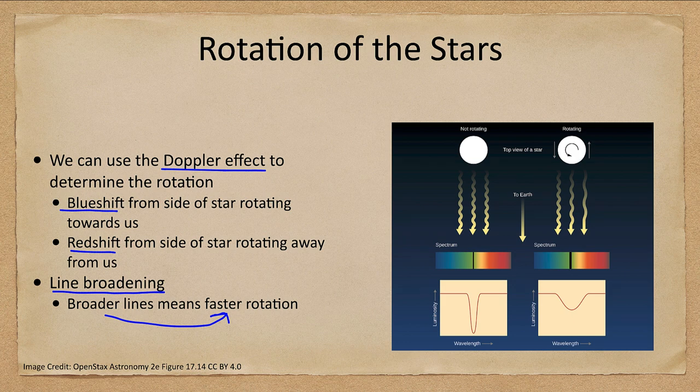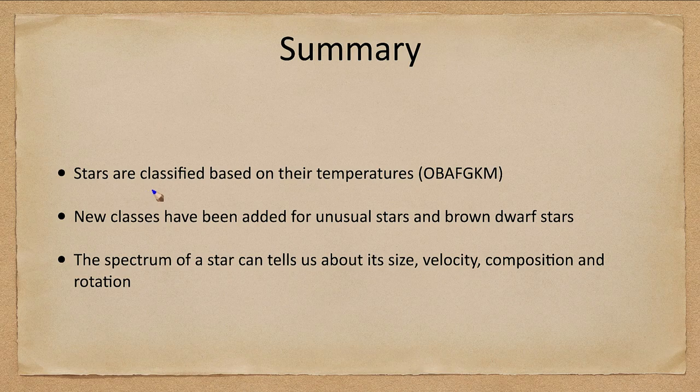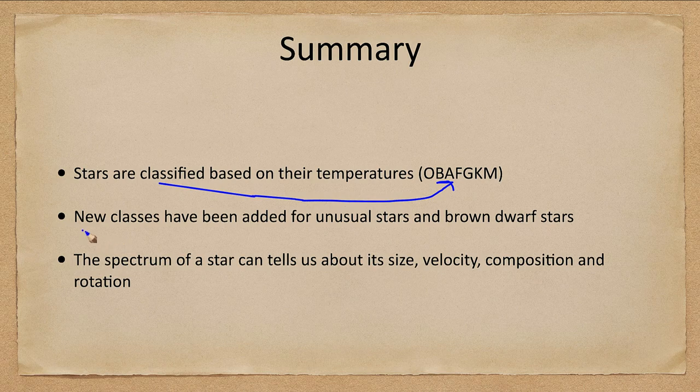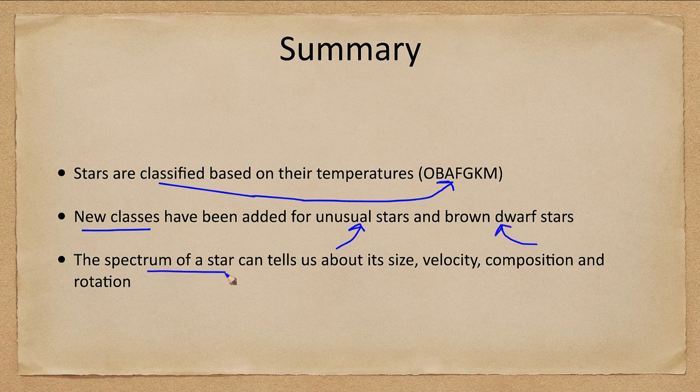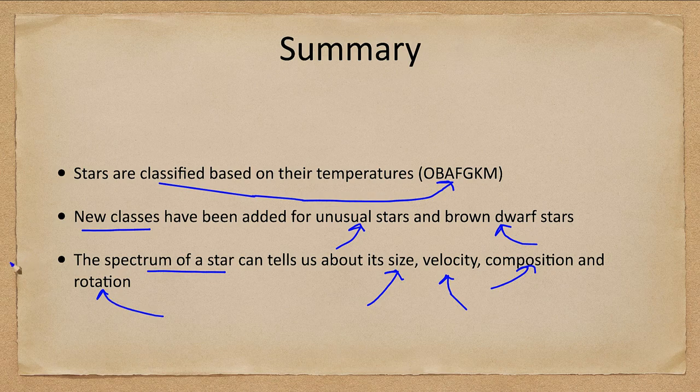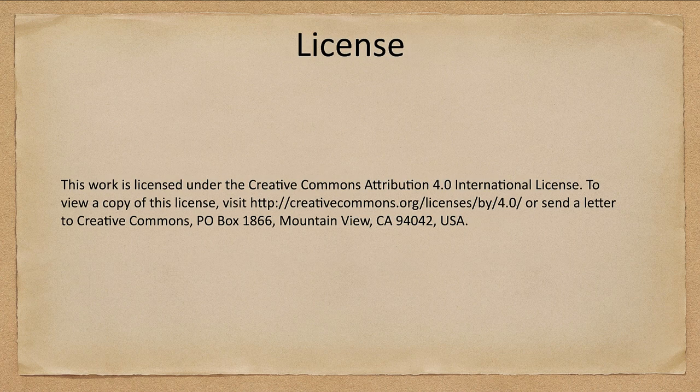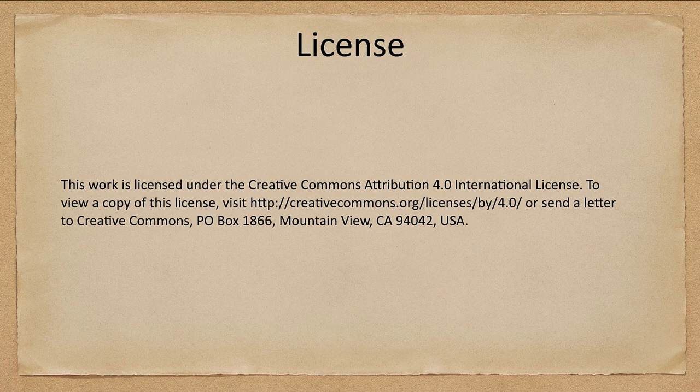That allows us to determine not only velocities of stars, but the rotations of stars as well. Let's go ahead and finish up with our summary. We looked at how stars are classified based on their temperatures using OBAFGKM. We've added new classes for unusual stars and the brown dwarf stars. And the spectrum of a star can tell us things about its size, velocity, composition, and rotation. That concludes this lecture on the spectra of stars. We'll be back again next time for another topic in astronomy. Until then, have a great day everyone, and I will see you in class.